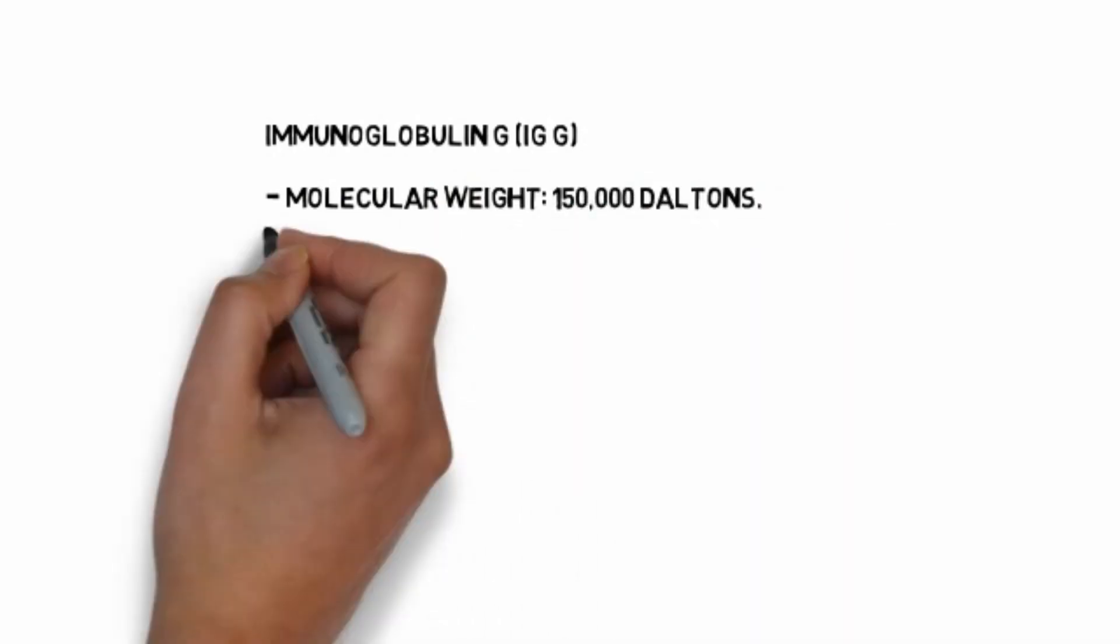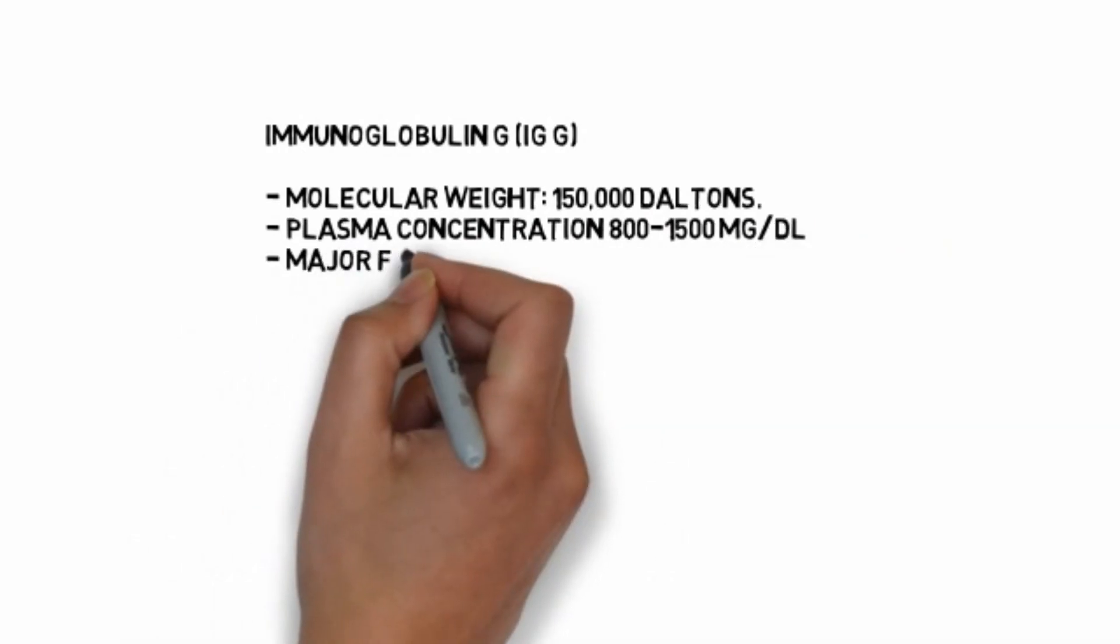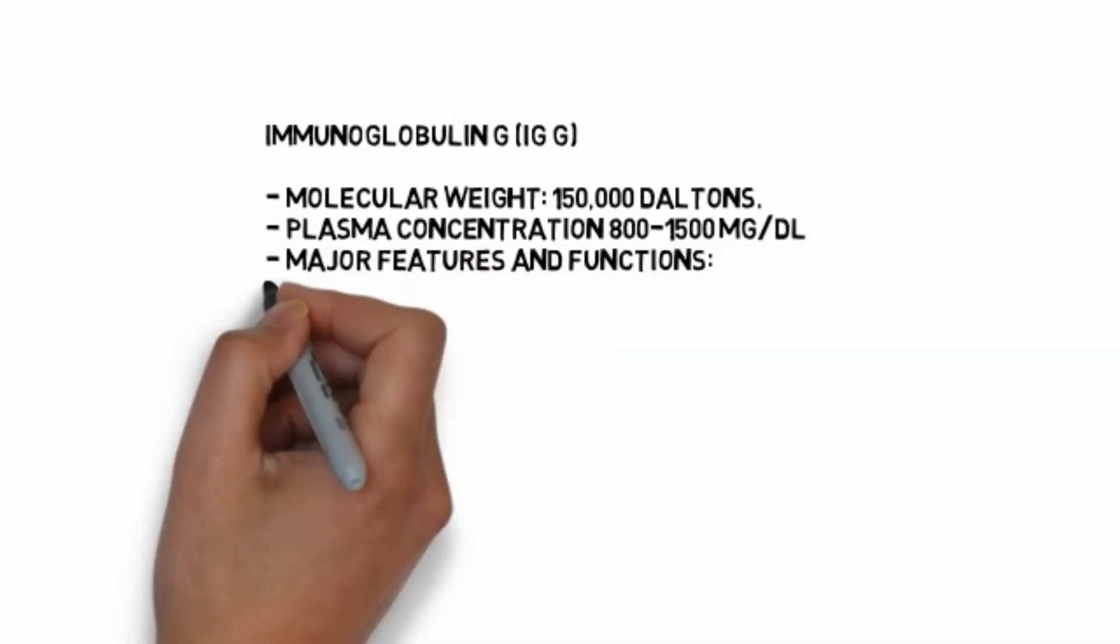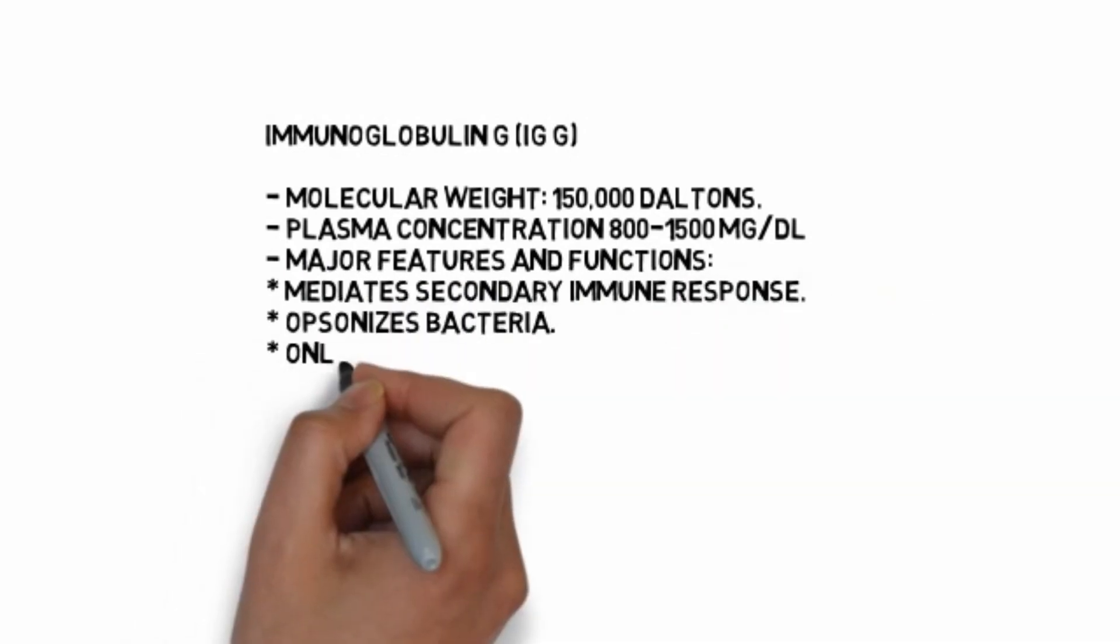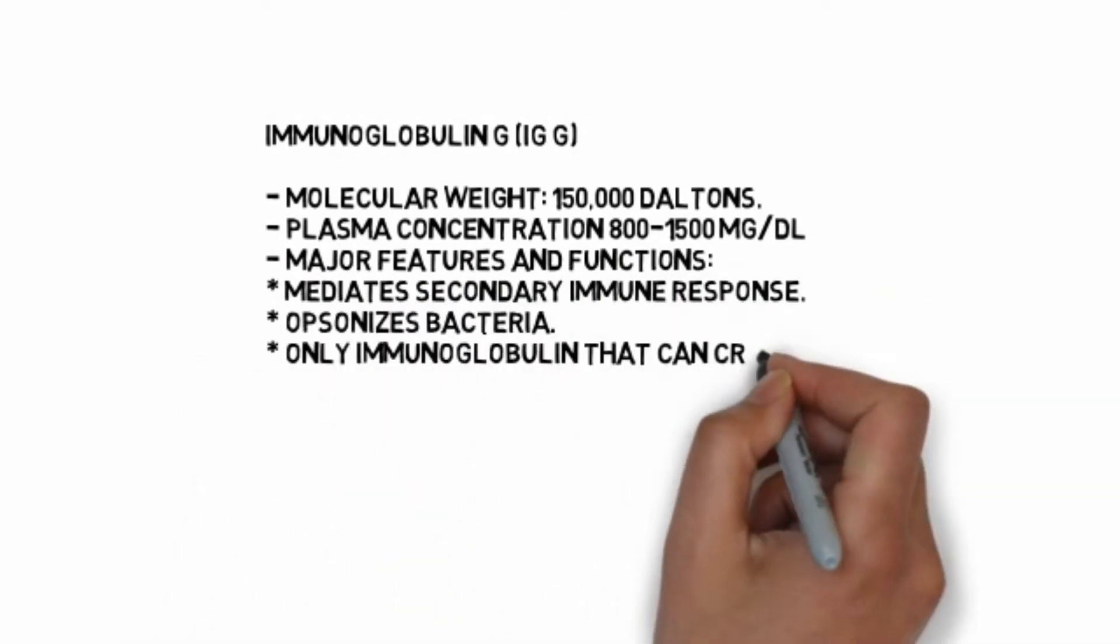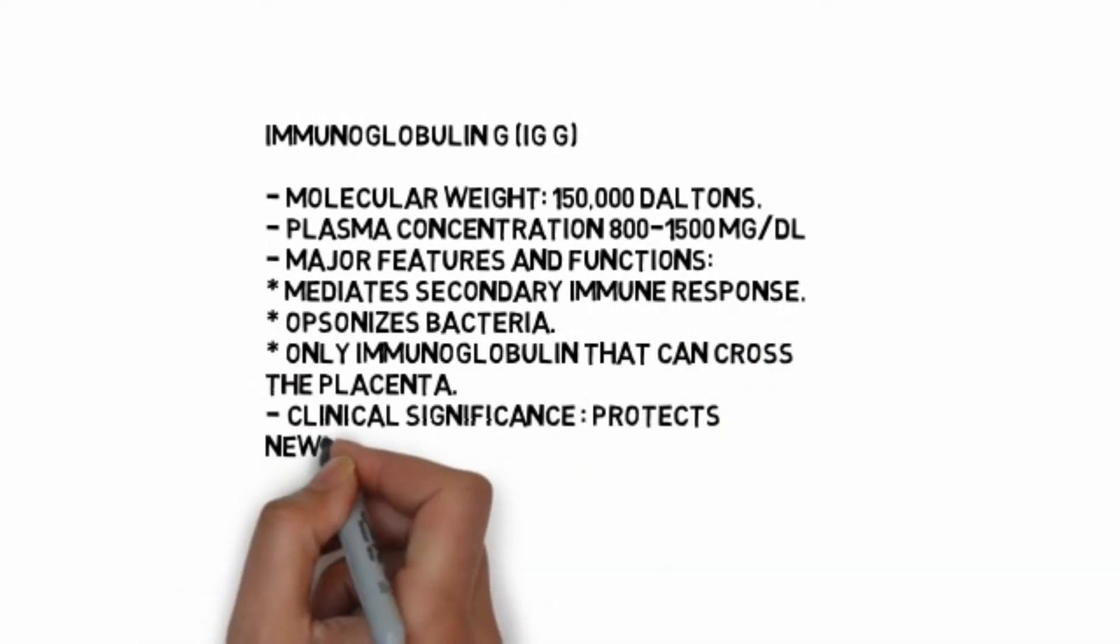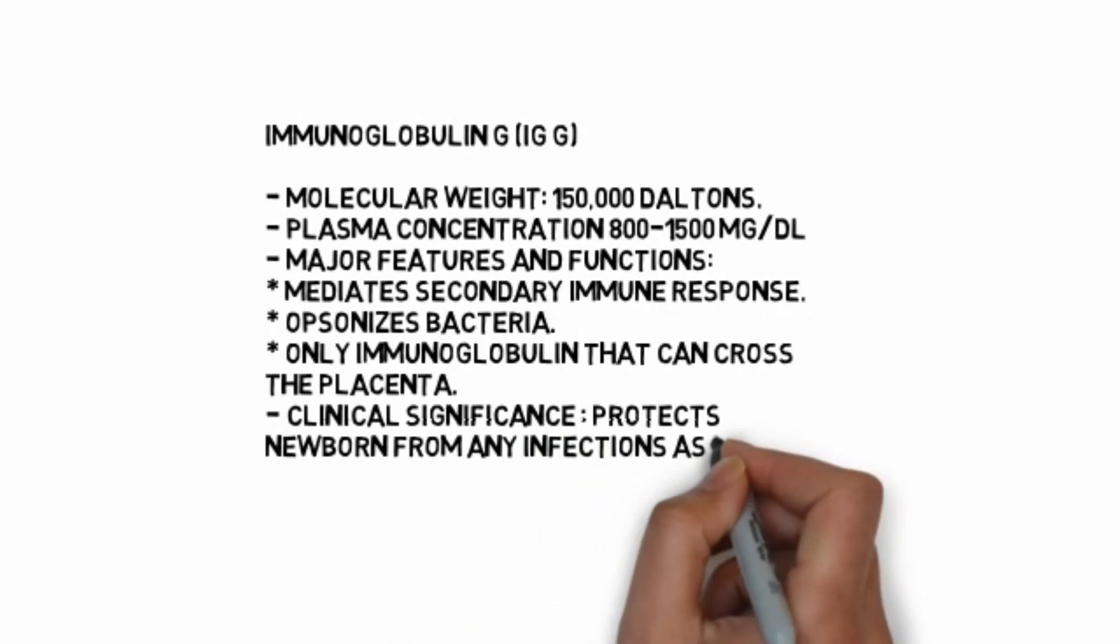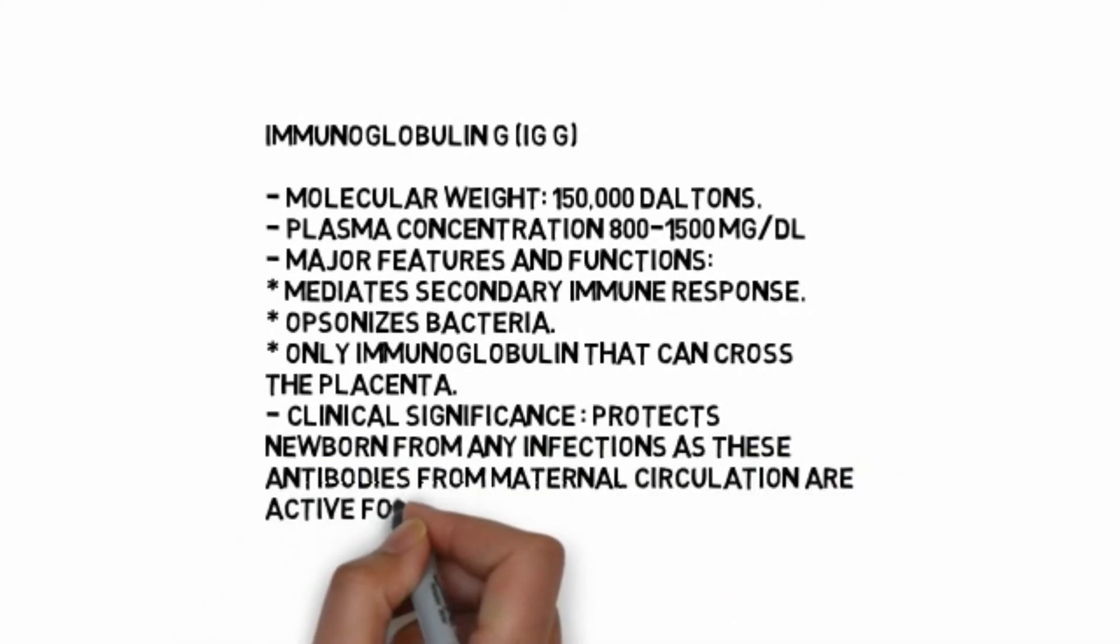Immunoglobulin IgG: molecular weight 150,000 daltons, plasma concentration 800 to 1500 mg per deciliter. Major features and functions: mediates secondary immune responses, opsonizes bacteria, only immunoglobulin that can cross the placenta. Clinical significance: protects newborn from infection as these antibodies from maternal circulation are active for three months after birth.